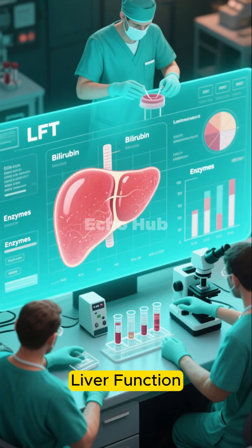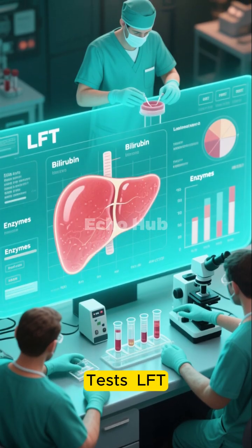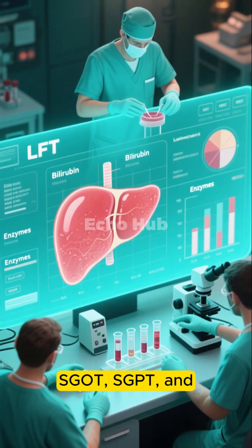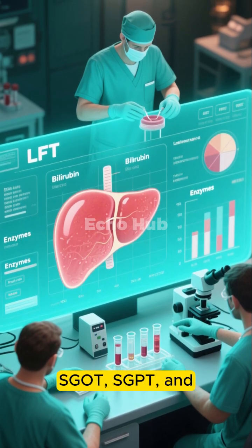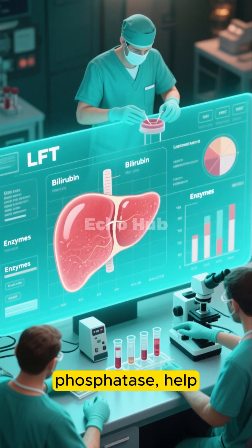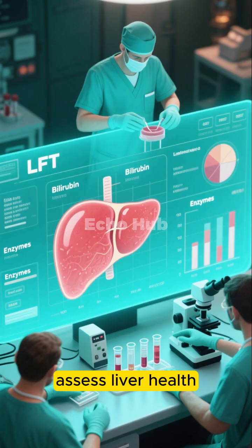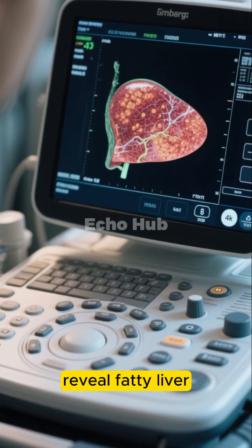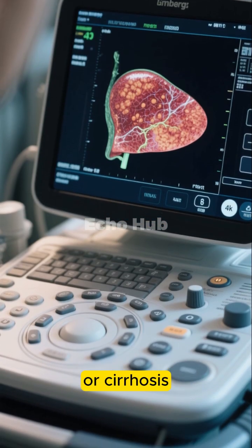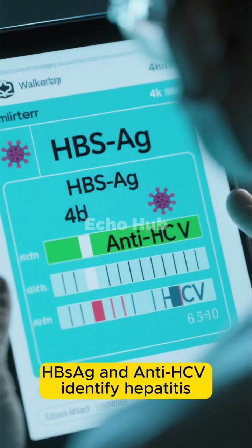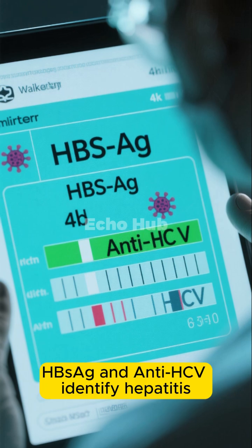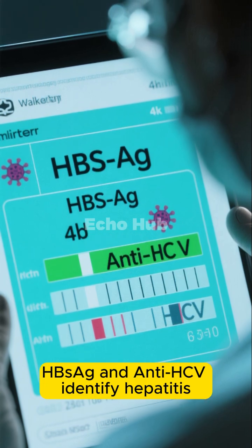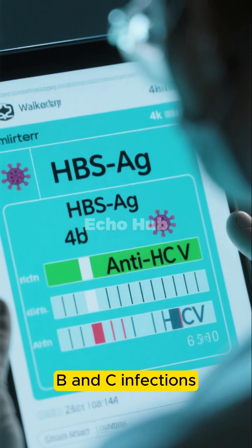5. Liver Diseases: Liver function tests (LFT), including bilirubin, SGOT, SGPT, and alkaline phosphatase, help assess liver health. Imaging such as ultrasound can reveal fatty liver or cirrhosis. Viral markers including HBsAg and anti-HCV identify hepatitis B and C infections.